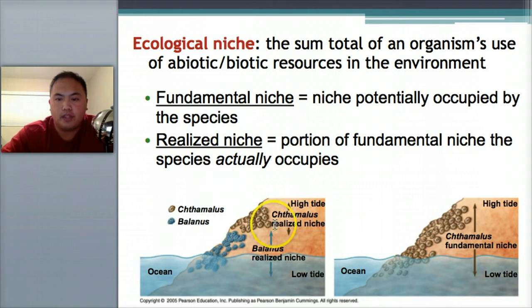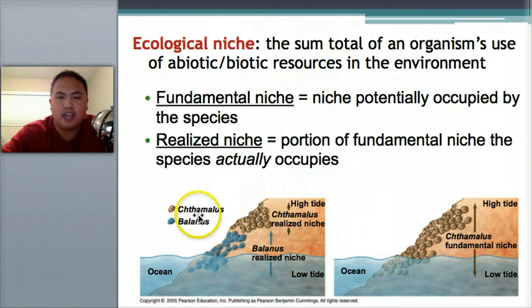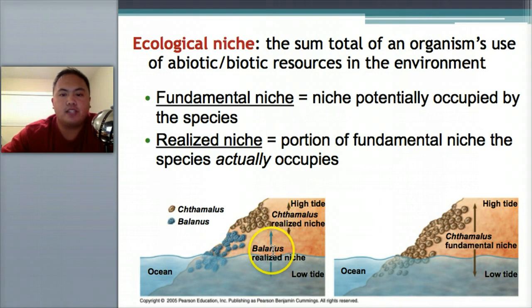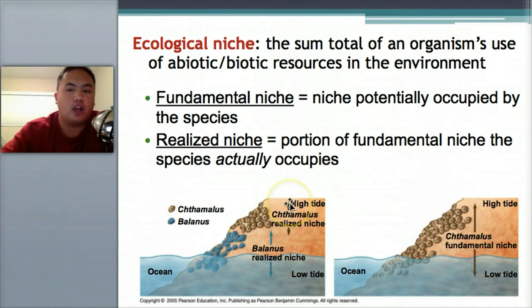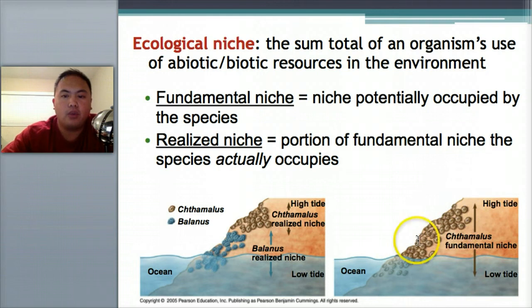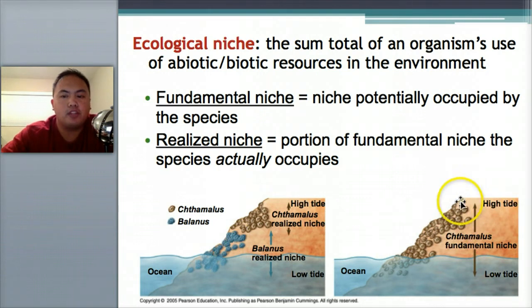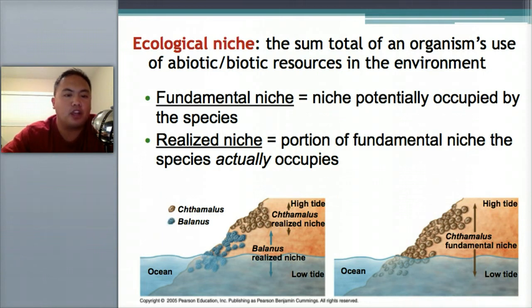For example, with the Chthamalus and the Balanus — different species existing on the shore — the realized niche is what each actually occupies. But fundamentally, the Chthamalus could occupy the whole area. The other species is in the way and taking over. You should understand the difference between fundamental niche and realized niche.